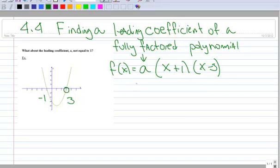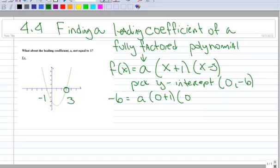You would pick, in this case, probably the y-intercept. So pick the y-intercept, and then the y-intercept is zero, negative six. So you just simply put zero in for x, and then solve for a.